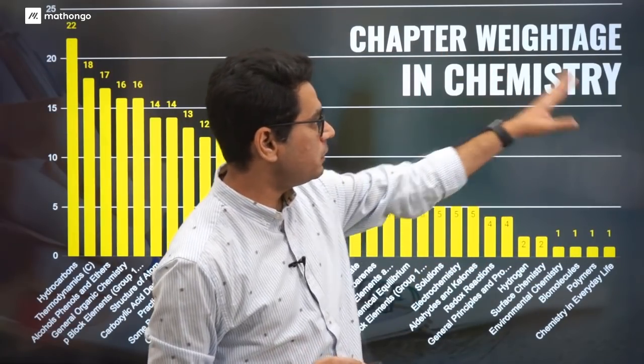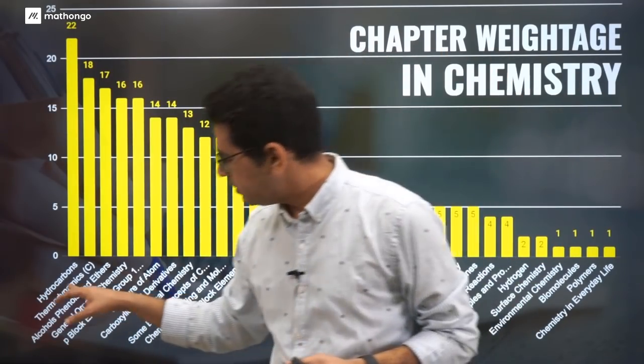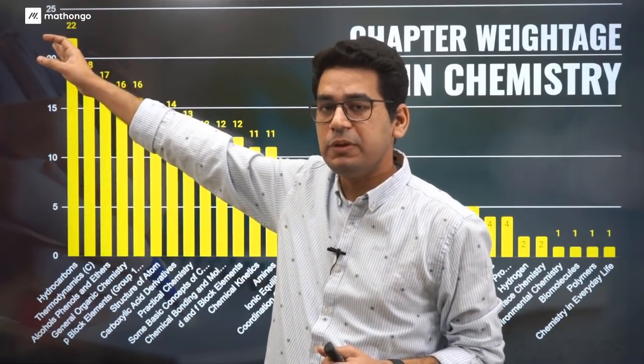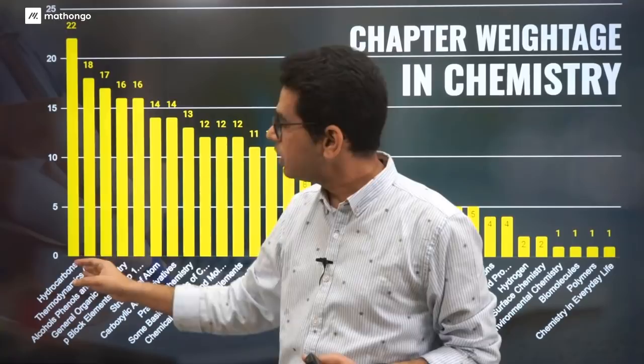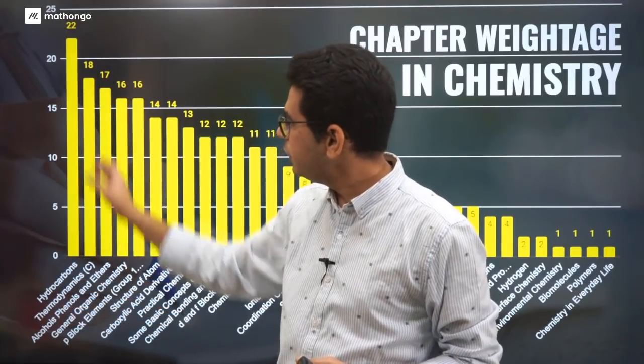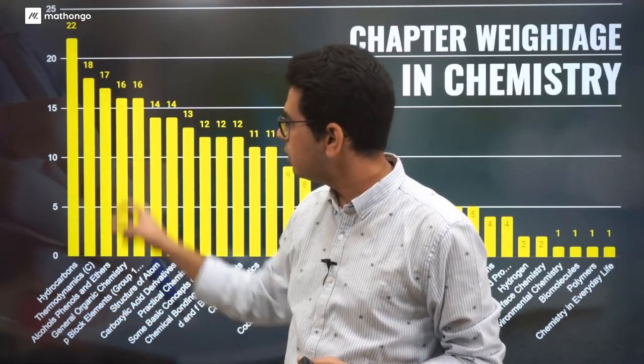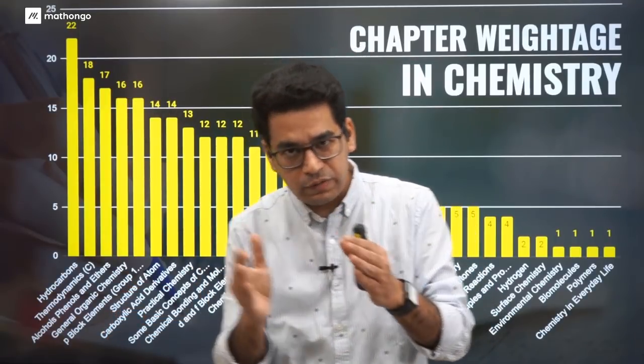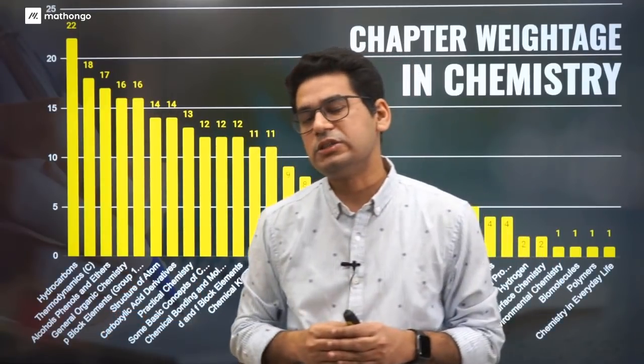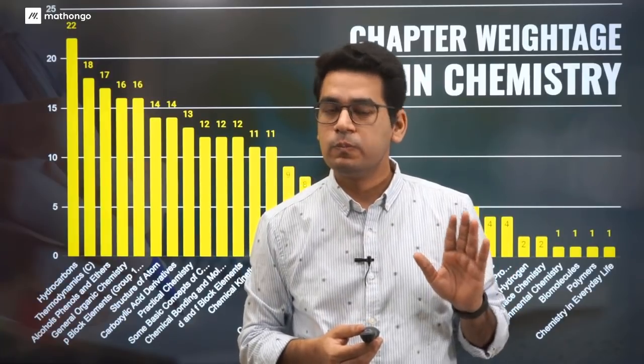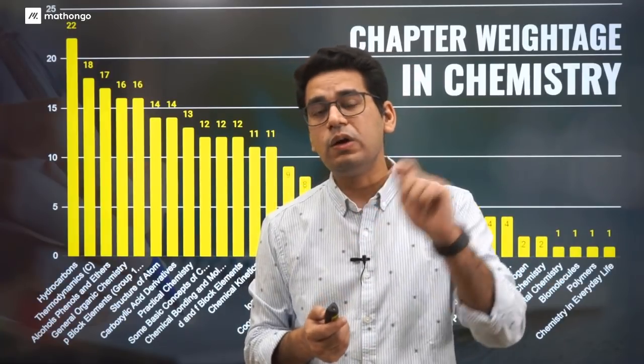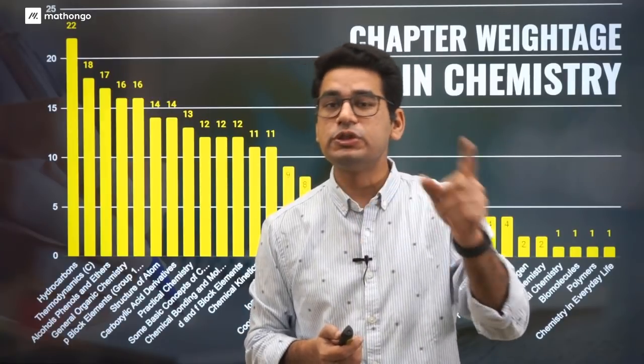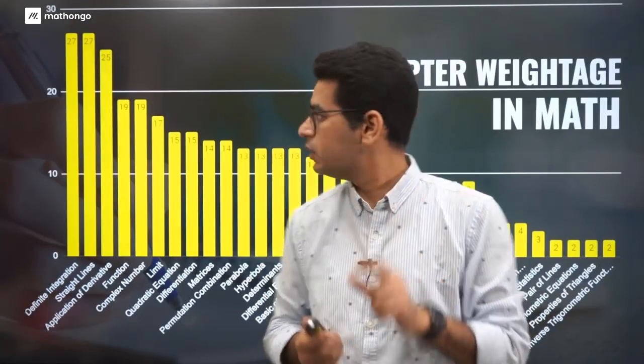Don't worry, no need to take screenshots. The PDF is available. So ray optics, semiconductors, this is the flow of the entire chapters in physics. Now chapter-wise weightage in chemistry. Hydrocarbons have the highest weightage. In the last five years, 22 questions in total have been asked on hydrocarbons. Thermodynamics 18, alcohol phenol ether 17, general organic chemistry 16, p-block 16. This is how the weightage of each chapter has been. There's a difference between weightage and number of questions in WBJE.